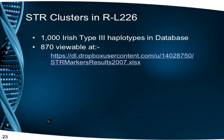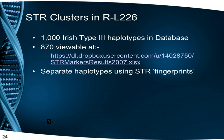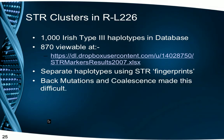There are now over 1,000 haplotypes — that is, individual test results — with Irish Type 3 signature in my database, and 870 are in the viewable database. We attempted to break the haplotypes into clusters based on STR fingerprints, which we hoped would indicate branches that have taken place in the last 1,500 years since the expansion of the haplogroup. However, because of back mutations and coalescence, different haplogroups are hard to identify with just STRs.